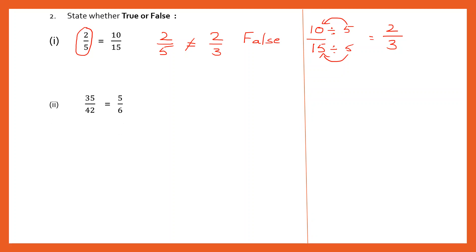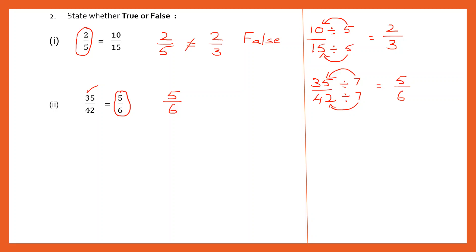Question 2: 5 by 6 is already in the lowest term. Let's reduce 35 by 42. Both are divisible by 7, so let's divide both by 7. 7 fives are 35 and 7 sixes are 42, so we get 5 by 6. So 35 by 42 has become 5 by 6, and the other fraction given in the question is also 5 by 6. The statement says they are equal, and this is true because they are equal. So this statement is true.